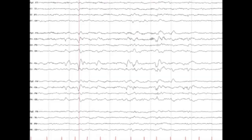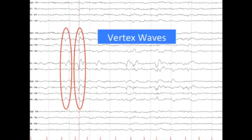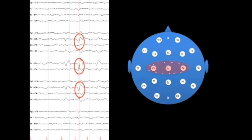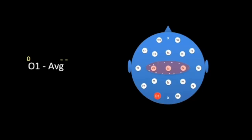Now let's see how reference contamination affects EEG. In an anterior-posterior bipolar montage during sleep in a young person, we can see vertex waves maximal at C3, Cz, and C4. This is a very high voltage field in a limited area, acting like our very tall man and making the average of the rest of the head negative. When we take an electrode not involved in this field — such as O1 — and compare it to that average, O1 appears positive with respect to the average of the rest of the head.